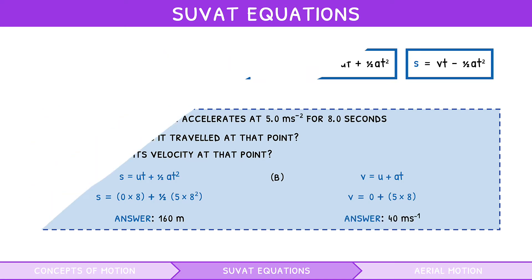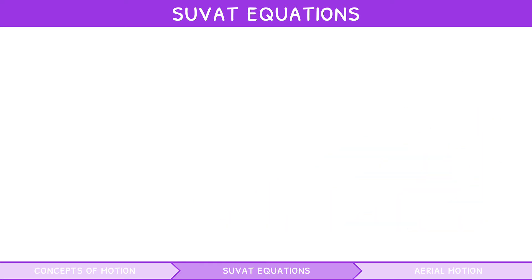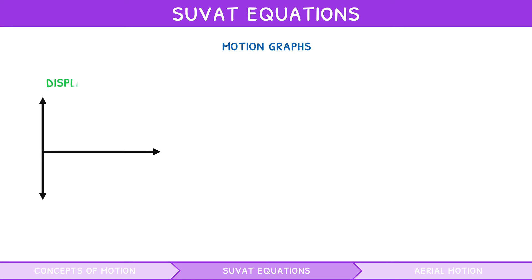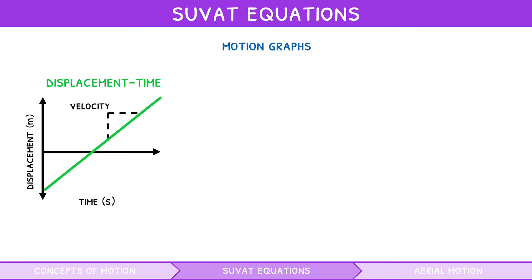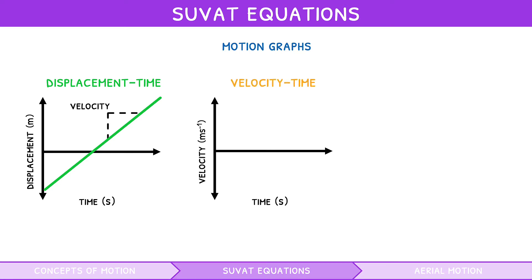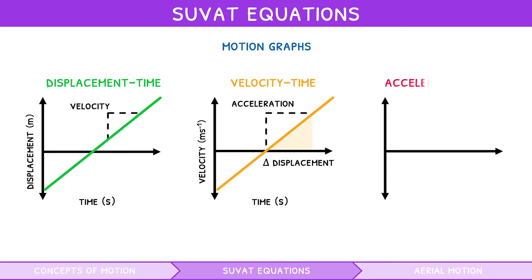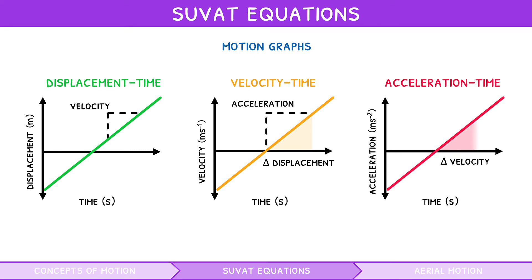The IB also expects you to be able to interpret, sketch, and draw motion graphs produced using the SUVAT equations. Displacement-time graphs represent displacement over time; the slope of the line at any point equals the velocity at that point. Velocity-time graphs represent velocity over time; the slope of the line at any point equals the acceleration at that point. To find the change in displacement, calculate the area under the line. Acceleration-time graphs represent acceleration over time; to find the change in velocity, calculate the area under the line.